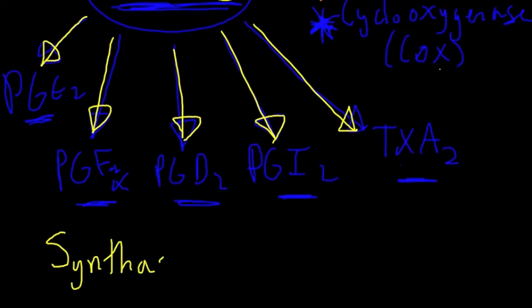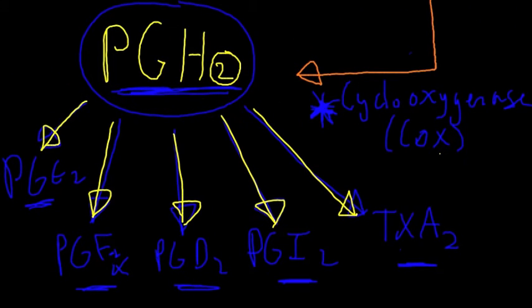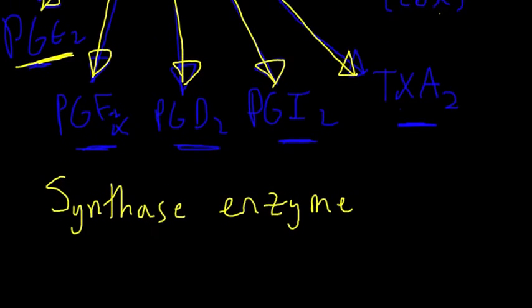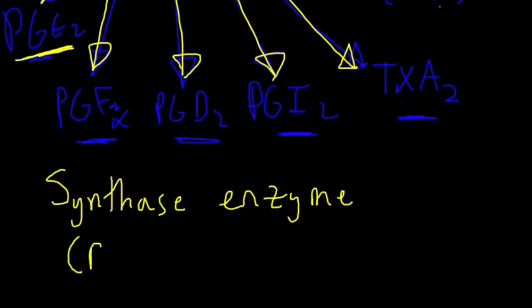Synthase enzyme steps that take place in different types of cells. So if I have a cell where I need to produce PGE2, I would go through PGE synthase.